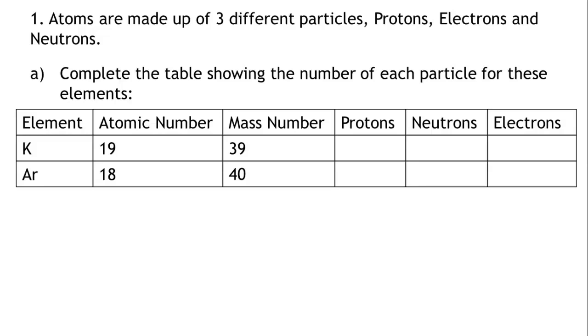Let's write down what we know. The atomic number is the number of protons in an atom. Therefore, the proton number for potassium, K, is 19, and the proton number for argon, Ar, is 18.